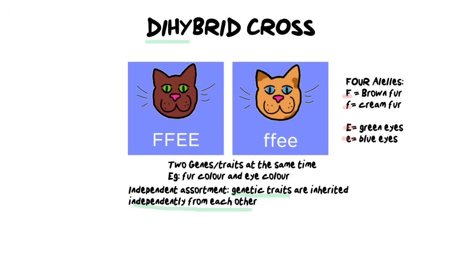The four alleles are: capital F for dark brown fur, small f for cream colored fur, capital E for green eyes, and lowercase e for blue eyes. It's important to have your key with your letters ready. I always suggest using letters that have a marked difference between the capital and lowercase form, because some letters look very similar in either case.